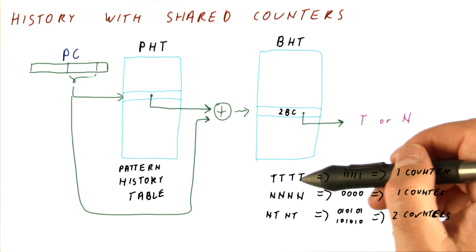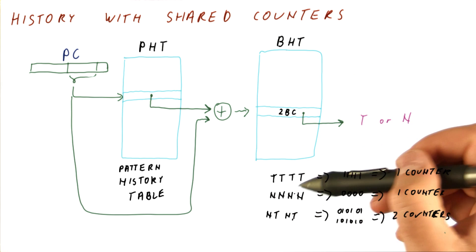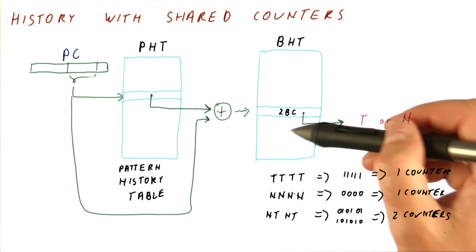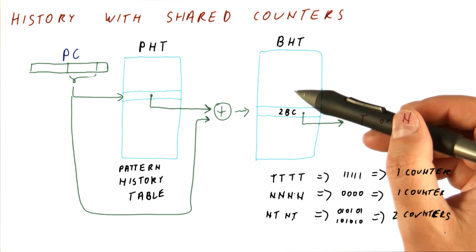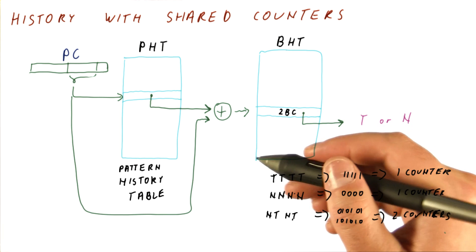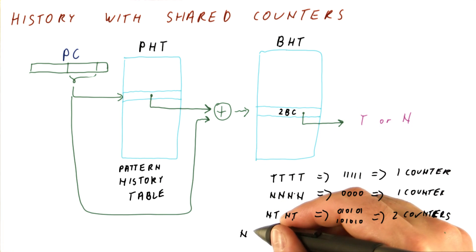So if we have a lot of these counters, most branches are going to be like these. We will be using very few entries by these branches, which leaves us plenty of counters for branches where we have a very long pattern.